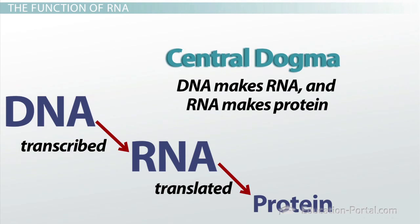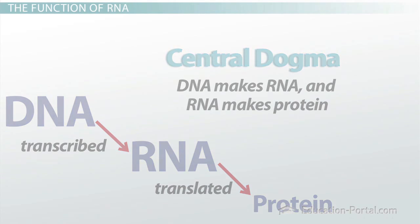At each step, a cell translates the information between the different molecular languages. That is, DNA language is transcribed into RNA language at the first step, and RNA language is translated into protein language at the second step. Three major types of RNA play a role during the journey from DNA to protein, although the functions of each type of RNA are different.